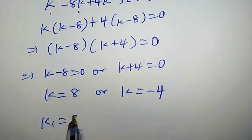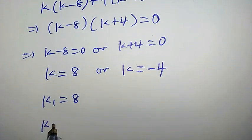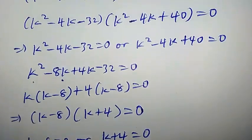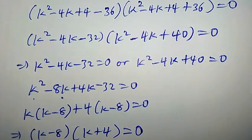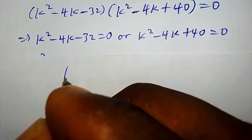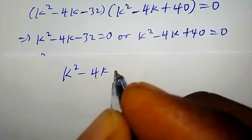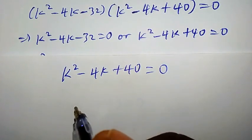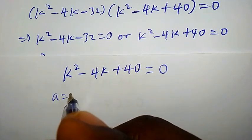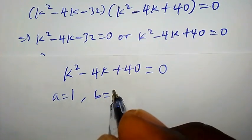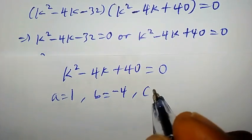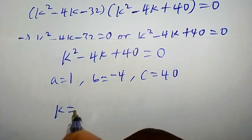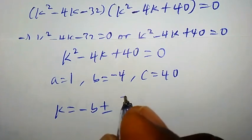This gives k minus 8 equal to 0 or k plus 4 equal to 0, so k equals 8 or k equals negative 4. Our k1 is 8 and k2 is negative 4. Now let us consider the second quadratic equation: k squared minus 4k plus 40 equal to 0. We can solve this using the quadratic formula, where a equals 1, b equals negative 4, and c equals 40.